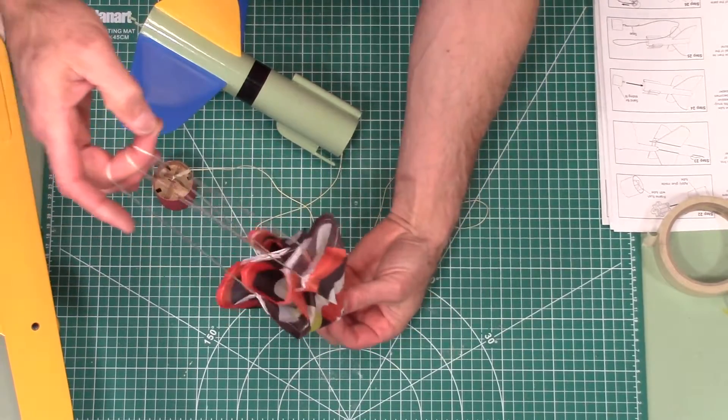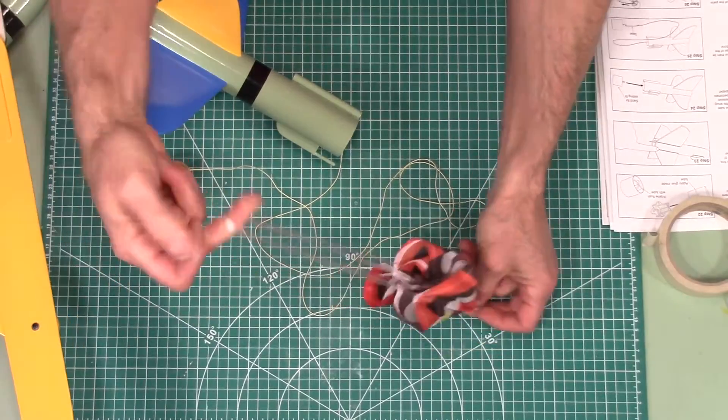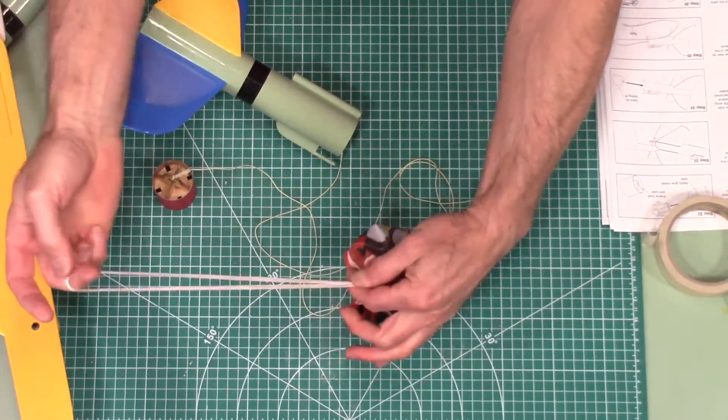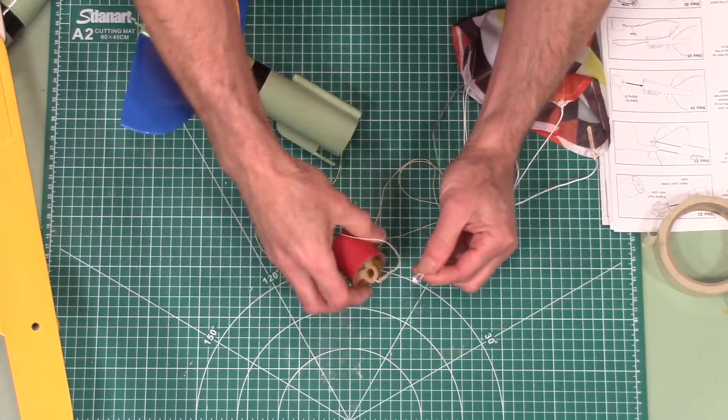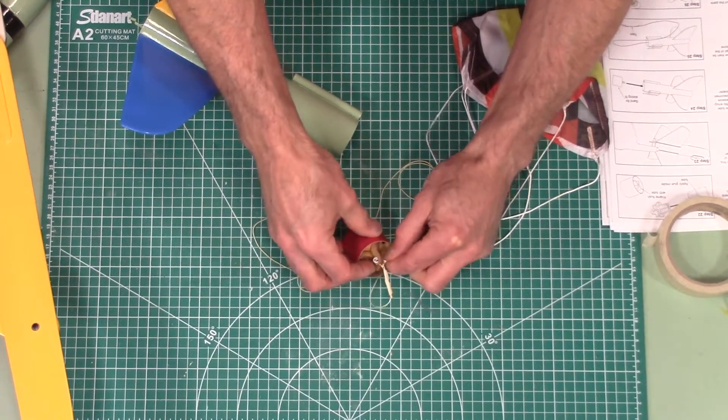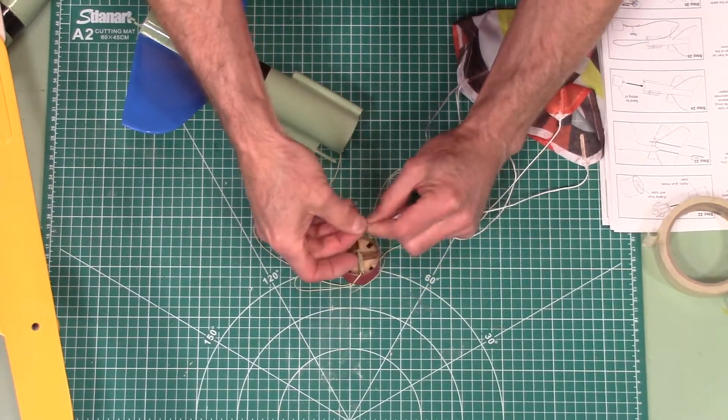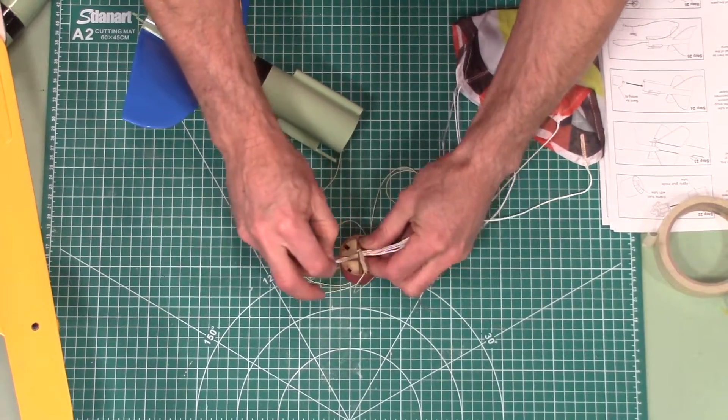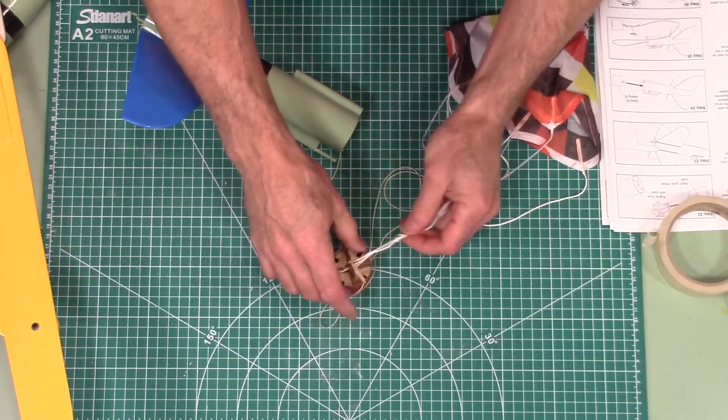So basically grab the apex right down there, grab the top here, and I kind of go back and forth like this to kind of get all the strings even. So you want to find that middle point right there. And then this is going to be attached here. And I didn't get one in through.